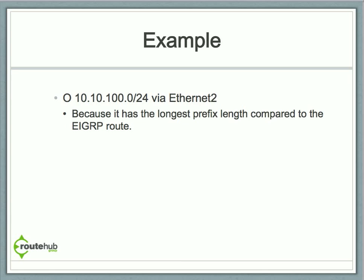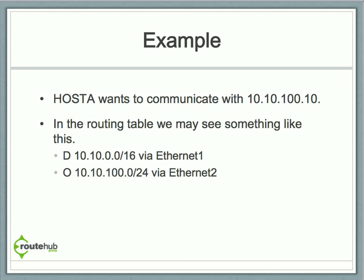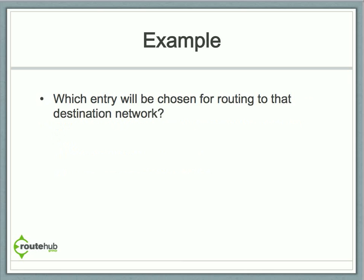Going back for a second — the EIGRP route 10.10.0.0/16 is more generic, more like a summary route. The 10.10.100.0/24 is a closer match, so the router will use that OSPF route for routing to point B.